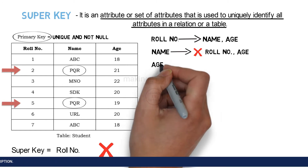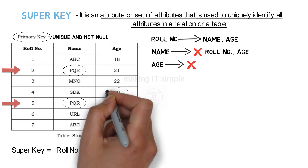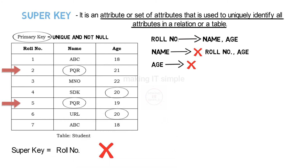Can age be a super key? The answer is again no. The same is the case with age as it was with name — there is redundancy in the column.